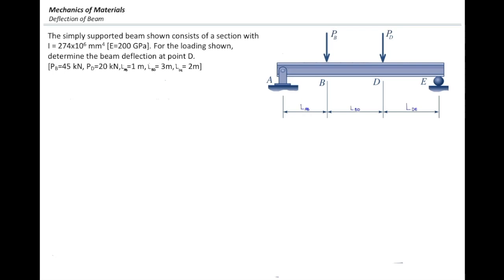Let's see what we have here. A simply supported beam shown in the figure consists of a section with the moment of inertia equal to 274 million millimeter to the fourth and the modulus of elasticity of 200 gigapascal.